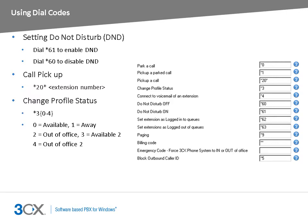You can change your extension status using the star 3 dial code. The number that follows indicates the status that you want. Use star 30 for available, star 31 for away, star 32 for out of office, star 33 for available too, and star 34 for out of office too.